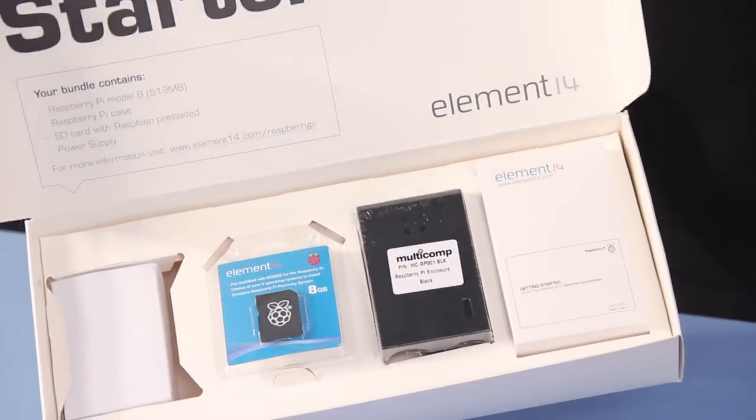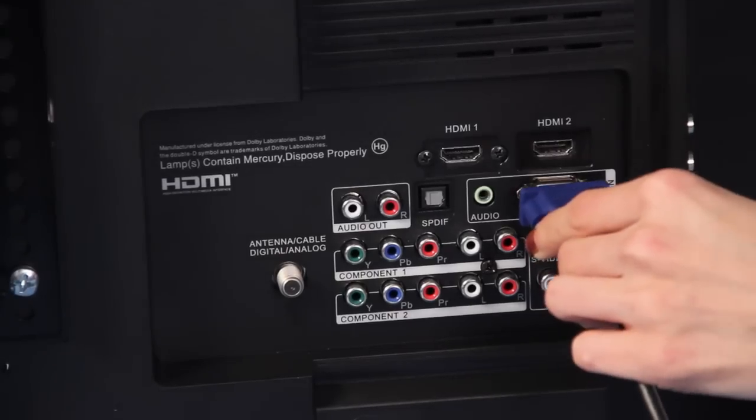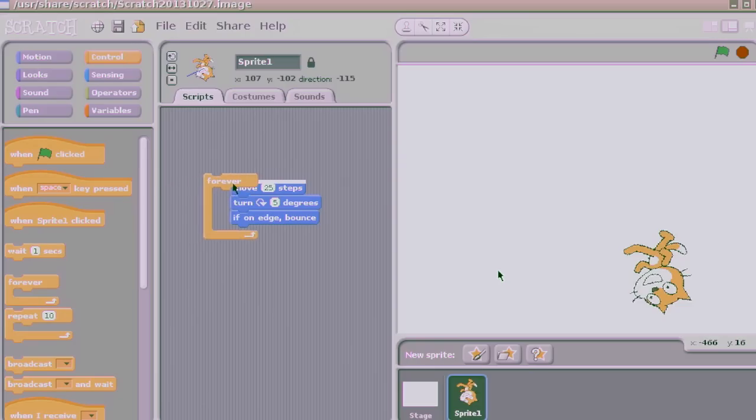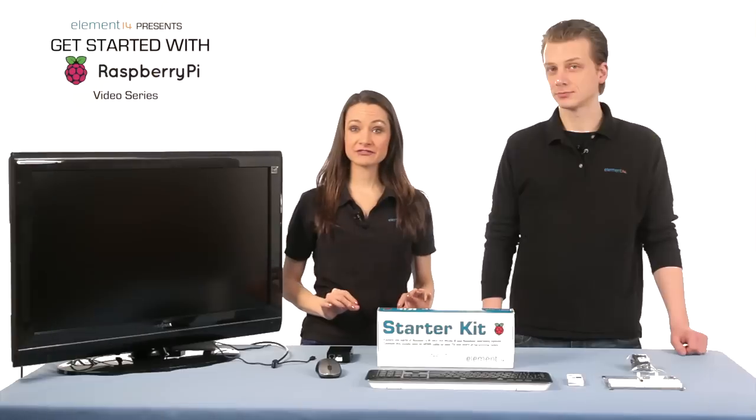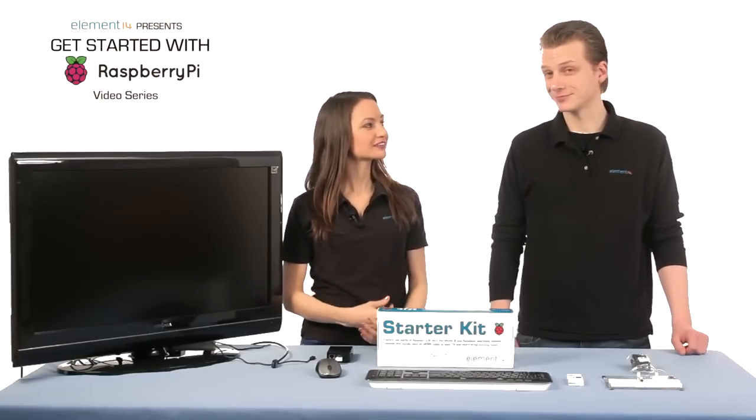In video one we unboxed the Pi and connected it to peripherals. In video two we explored the different things that come pre-installed on the Pi. In video three we connected the Pi to the internet. In this video it's gonna be a little different. Kave's gonna do all the work.